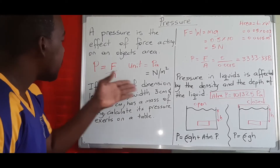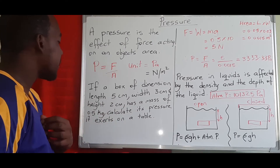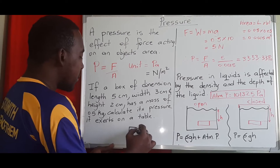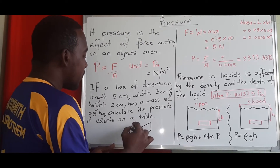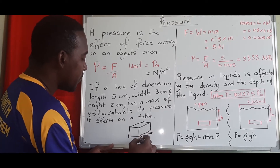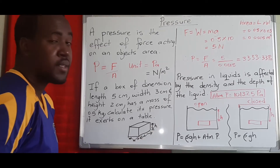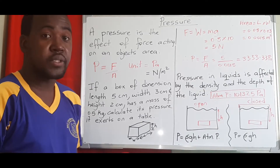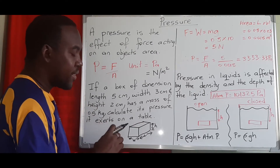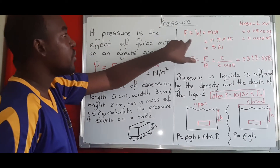For example, if we have a box with dimensions five centimeters length, three centimeters width, and two centimeters height, with a mass of 0.5 kilograms, we can calculate the pressure it exerts on a table. The key point is that when a box sits on the table, only the length and width touch the surface — the height is not relevant to the contact area.